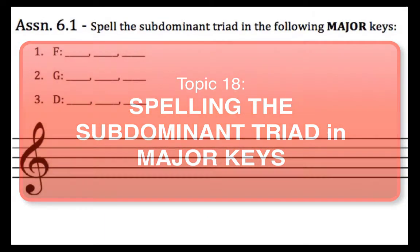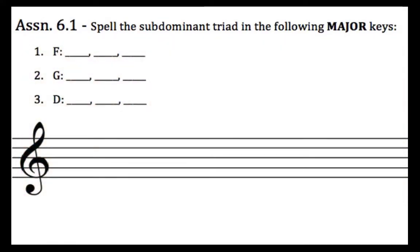That is the triad built on the fourth scale degree. In this video we'll be working through the first three problems of assignment 6.1 in which you have to spell the subdominant triad in major keys. The first key listed is F major.